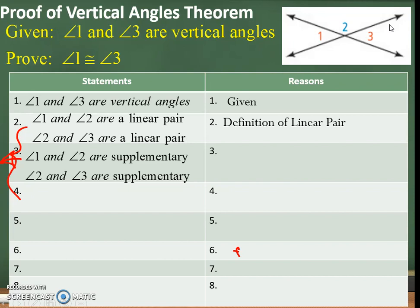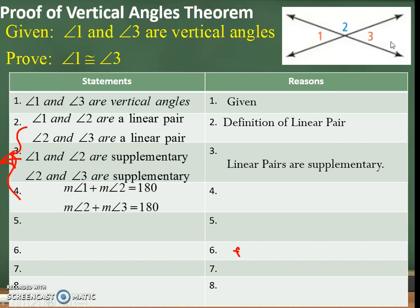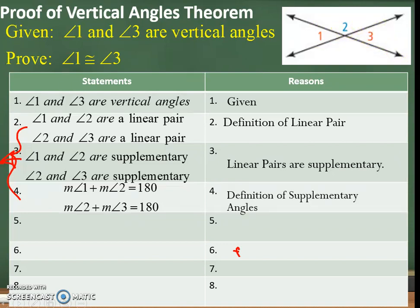Angle 1 and angle 2 are supplementary, and angle 2 and angle 3 are supplementary — that means 180 degrees. The reason is: linear pairs are supplementary. So any linear pair is a supplementary angle. Angle 1 plus angle 2 equals 180, and angle 2 plus angle 3 equals 180. That is the definition of supplementary angles.